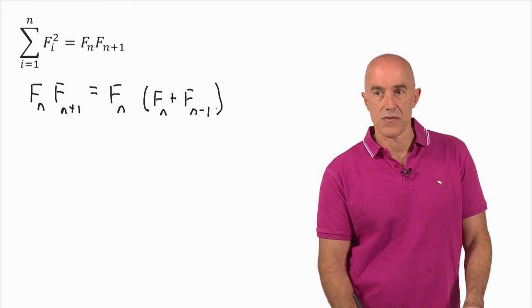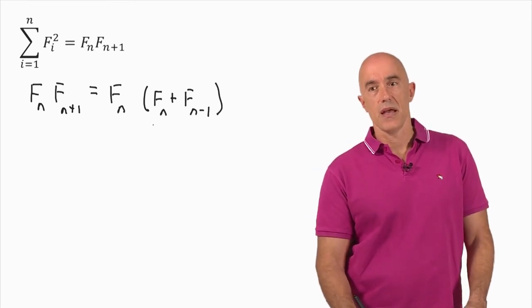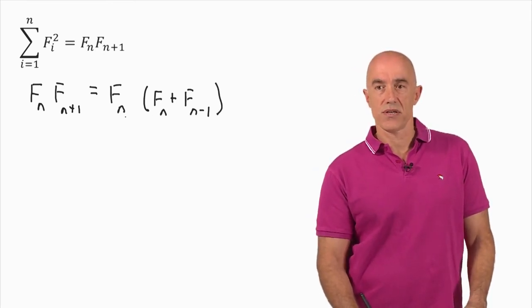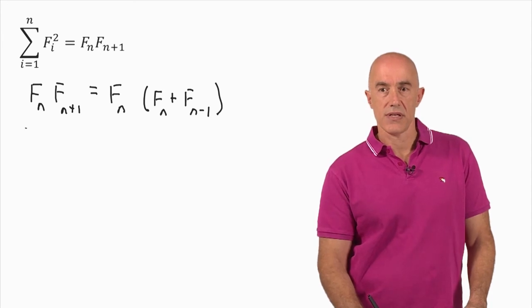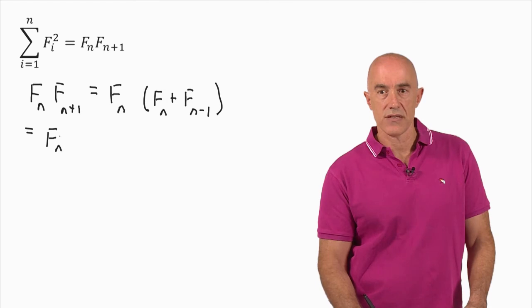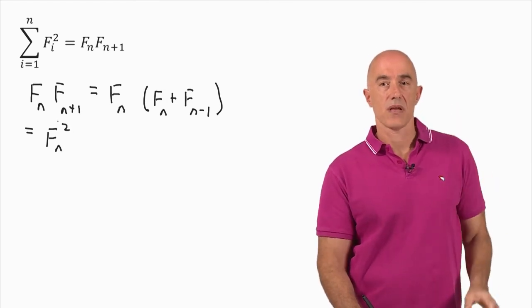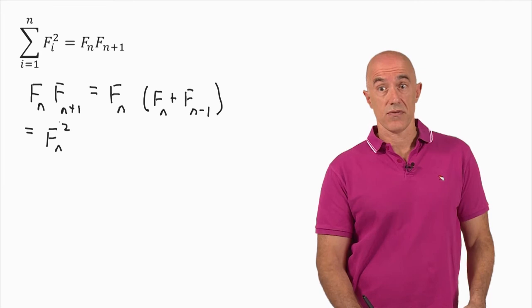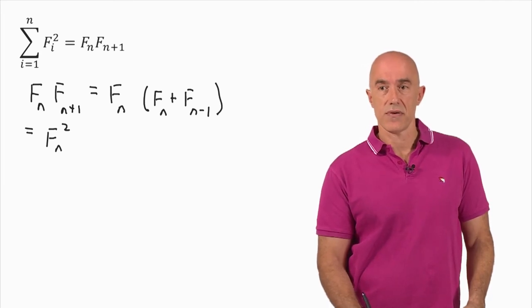So that's the recursion relation. And immediately when you do the distribution, you see that you get an F sub n squared, which is the last term in this summation, the F sub n squared term.